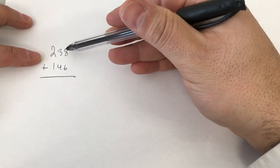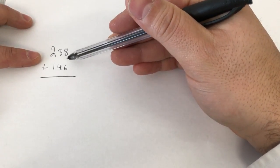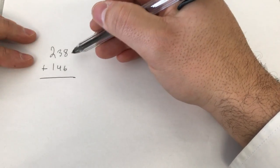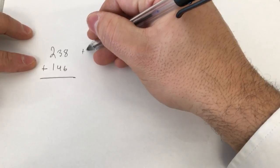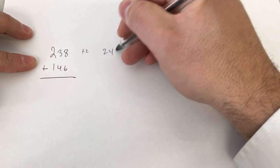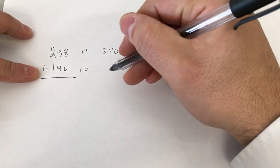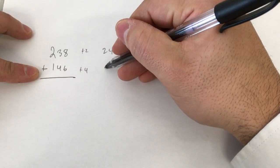What you want to do is round each of these numbers up to the nearest 10, and think about what you're doing to the numbers. For this one, I would have to add 2 to bring it to the nearest 10, which would be 240. And for this one, I would have to add 4 to bring it up to the nearest 10, which would be 150.